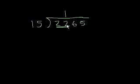1 times 15 is 15, right? 22 minus 15. We could do the whole carrying thing. 1, 12. 12 minus 5 is 7. 1 minus 1 is 0. 22 minus 15 is 7. Bring down the 6.